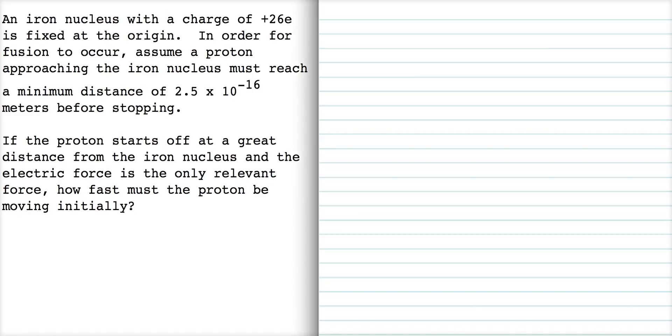In this problem we have a proton that we'll call q1 with a charge of plus e, and an iron nucleus q2 with a charge of plus 26e. The proton starts with some initial velocity v naught, travels toward the iron nucleus, and gets really close at some distance rmin before it turns around. We're told that rmin is 2.5 times 10 to the minus 16 meters.